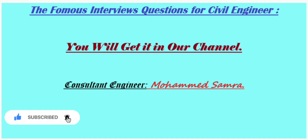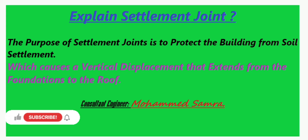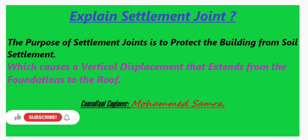Question number five: explain the settlement joint. The purpose of a settlement joint is to protect the building from soil settlement, which causes a vertical displacement that extends from the foundations to the roof. For more knowledge, please follow us. Have a nice day. Consultant Engineer Mohammed Samra.